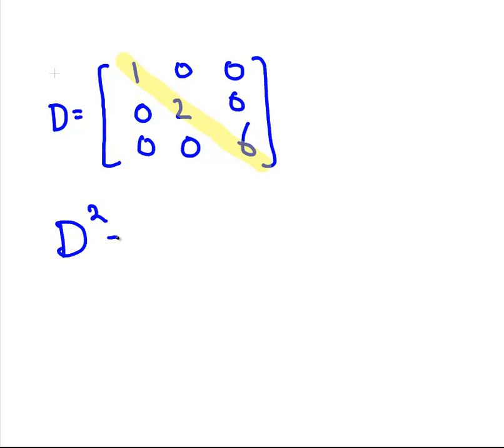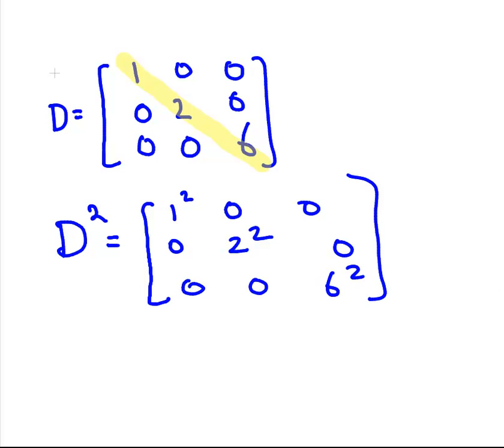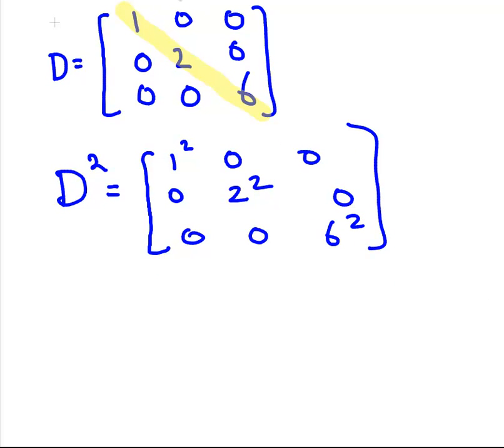Suppose we were interested in D squared, where D is the matrix above there. Essentially, rather than have to go through the whole thing or multiplying it out by D by D, essentially all that is required is to actually square individual terms here. So this is going to be 1 squared, 0, 2 squared, 0, 0, 0, and 6 squared. That's why a diagonal matrix is very handy to know, because you don't have to do any particularly difficult operations there.